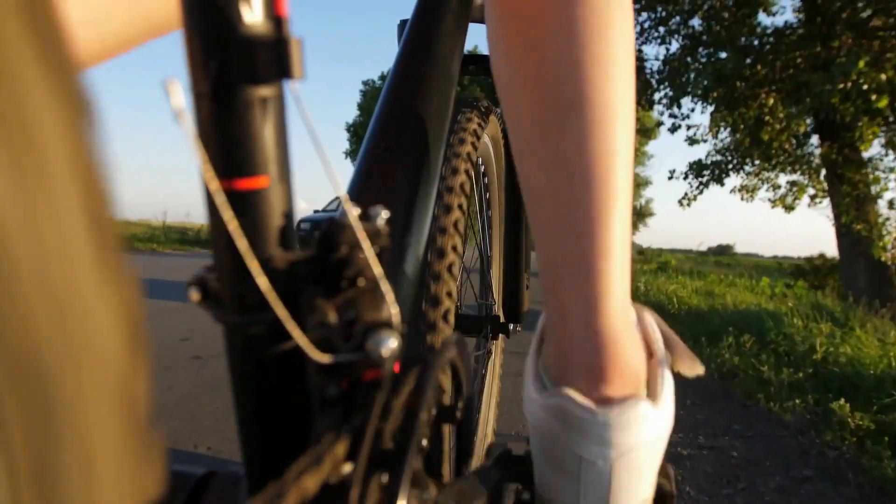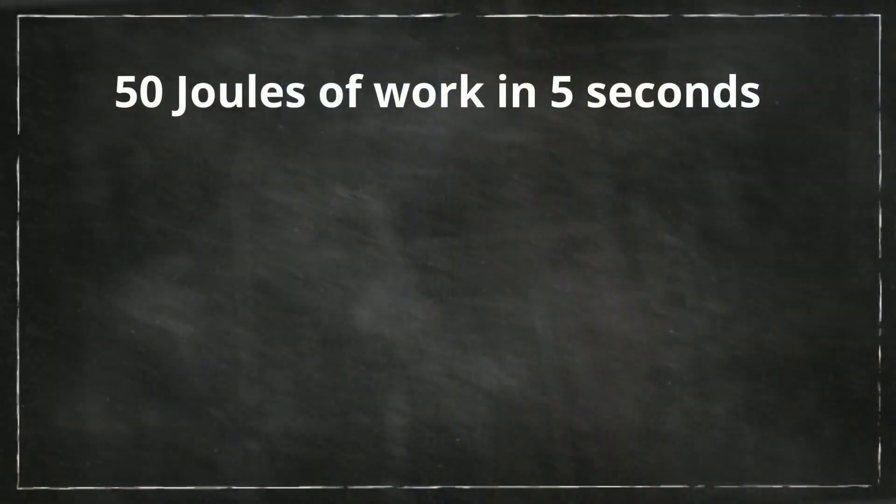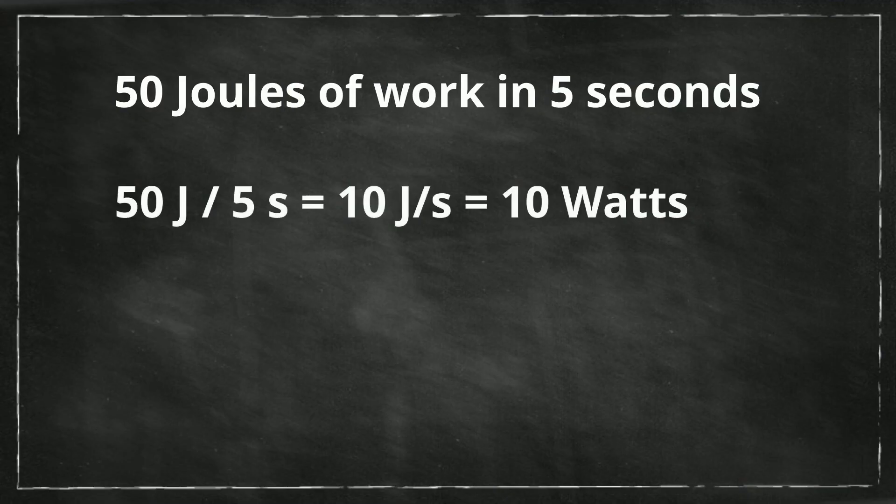For example, when you ride a bike, you put out 50 joules of work in 5 seconds, so you have produced 10 joules per second, or 10 watts of power.